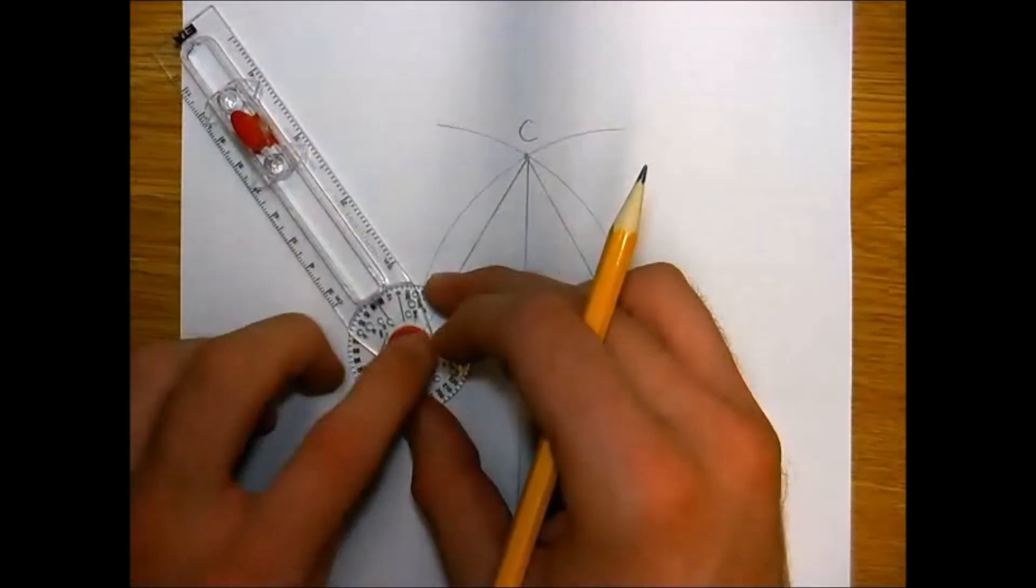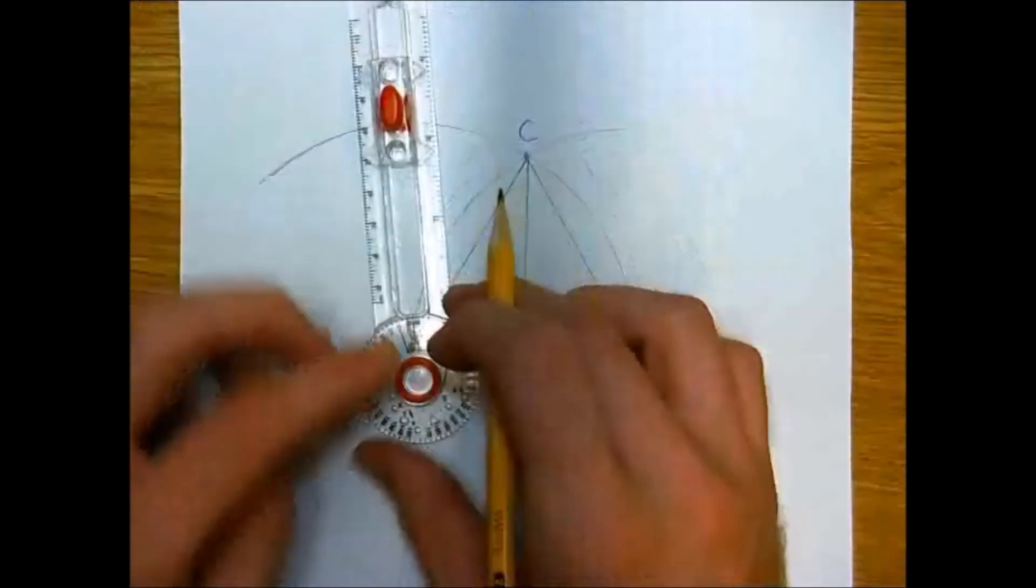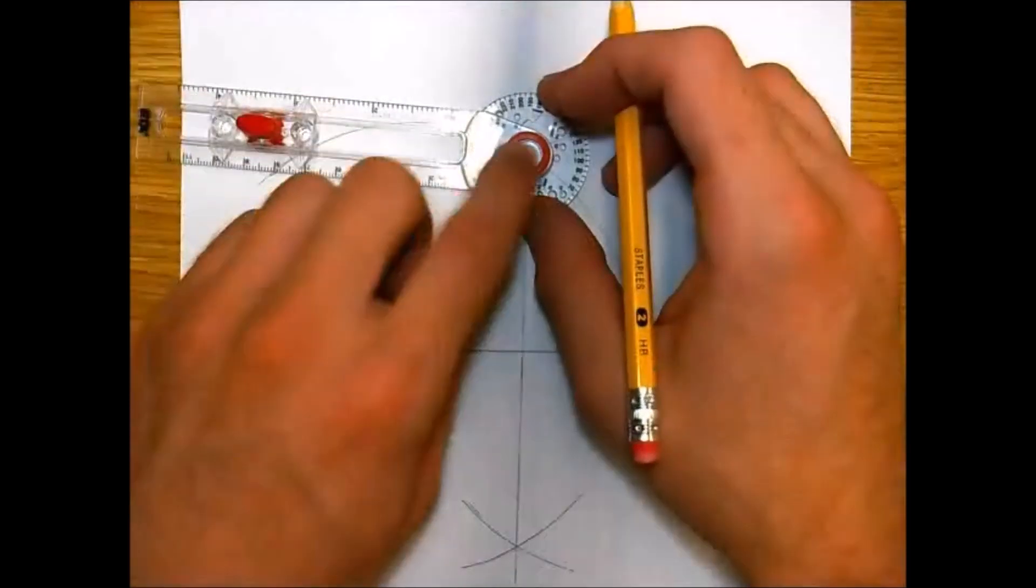Now we repeat this process starting from point A. We set the compass on A and swing an arc above, and we're going to repeat that process from point C.